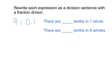This is Problem 1A from the homework. The directions read to rewrite each expression as a division sentence with a fraction divisor. So I know that this second number, 0.1, is my divisor. Now that's my divisor, so if I were to rewrite this as a fraction, I would write 9 divided by 1 tenth.